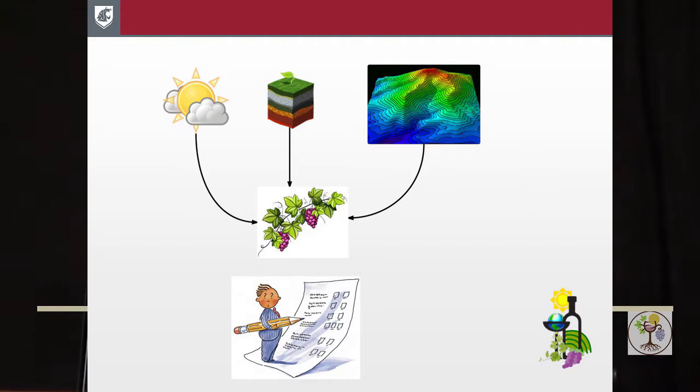For our system, we focused on three main components: weather, topography, and soil. We combined them using fuzzy logic, which I'm going to discuss a little bit more later on. After we developed the vineyard potential scale, we wanted to evaluate our model to see how well it's doing.